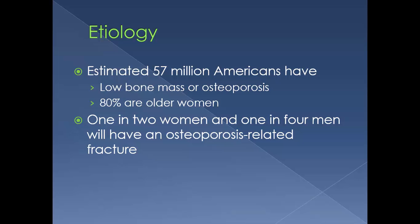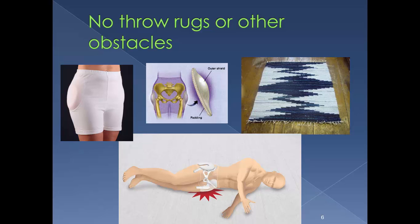It is estimated that 57 million Americans have low bone mass or osteoporosis, although it can happen at any age in both men and women. Eighty percent are older women that are affected. One in two women and one in four men will have osteoporosis-related fractures. So one of the things you want to do is make sure they don't have throw rugs or other obstacles in their house that could cause them to fall, because if they do fall, the chances of fracturing things is increased.